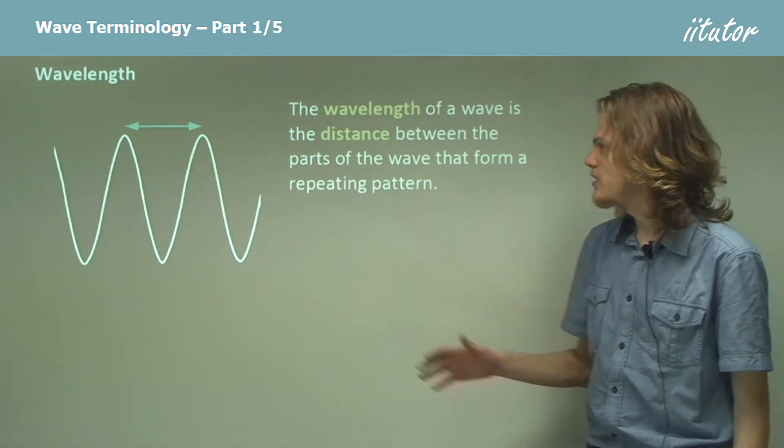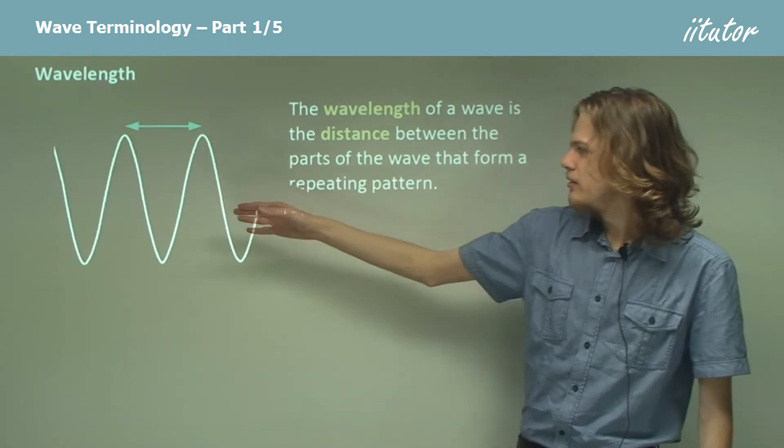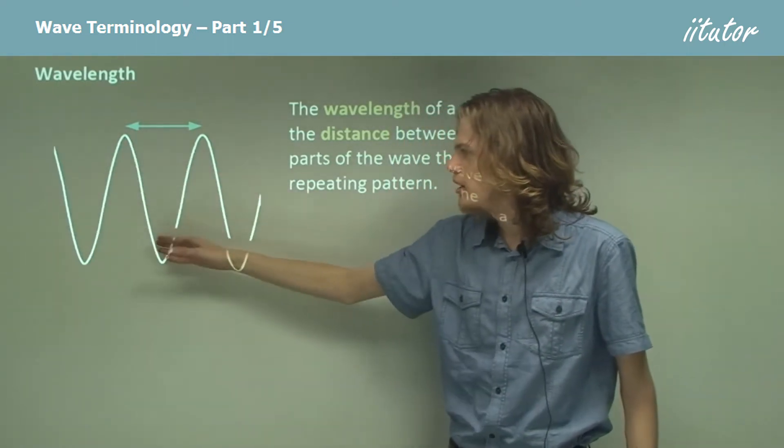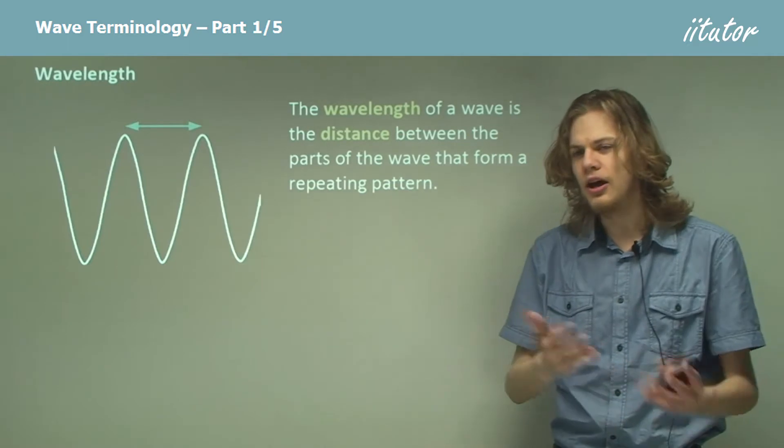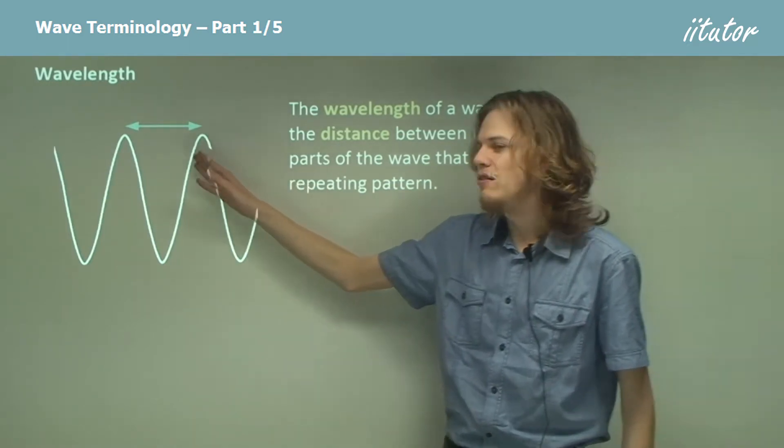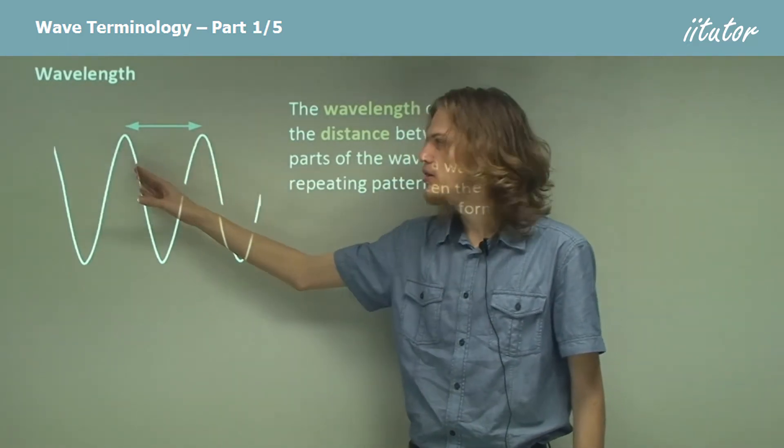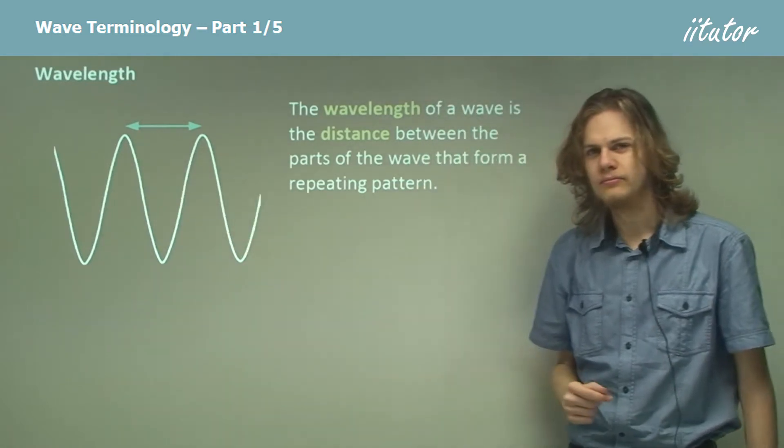We can see in this diagram over here that we have two repeating parts of the wave going up and then down, and the wavelength is the distance between these two top bits.